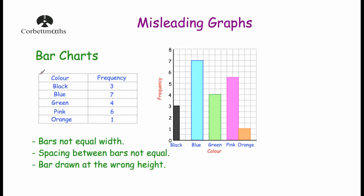Let's have a look at bar charts. So here we've got a bar chart with colours: black, blue, green, pink and orange — this could be colours of cars in a car park or colours of people's hair. The frequencies are 3, 7, 4, 6 and 1. I've drawn this bar chart intentionally wrong. First of all, the bar for black is only one square wide, whereas the bars for blue, green, pink and orange are all two squares wide. So that's one reason why this bar chart would be misleading.